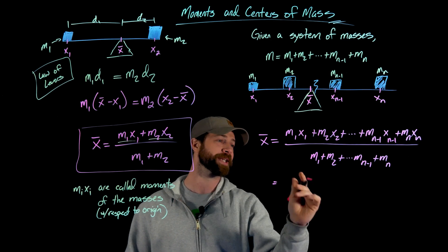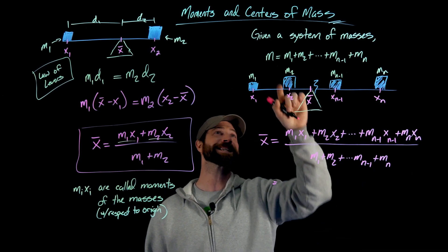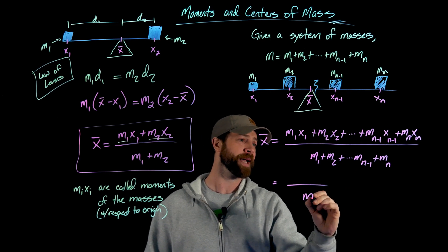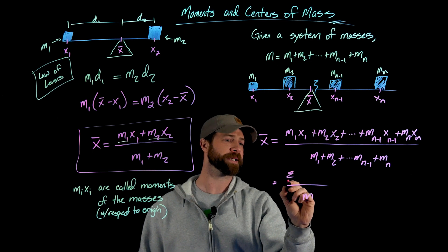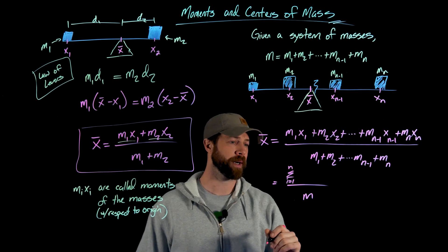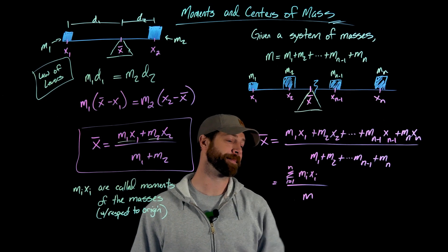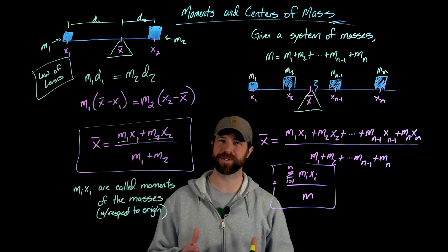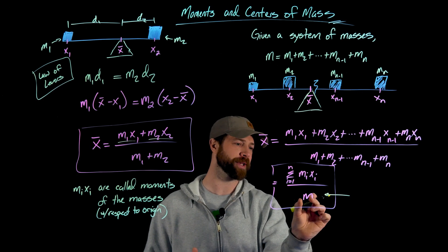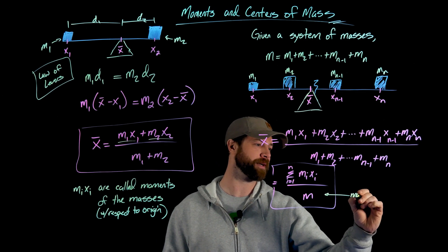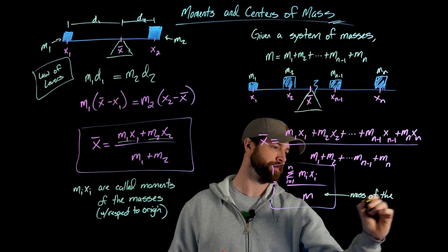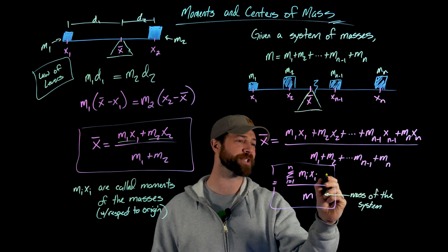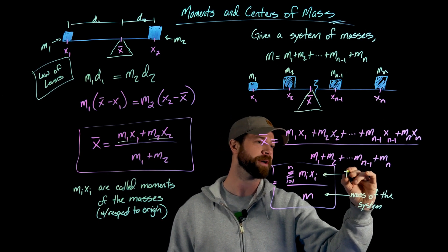We can simplify this. The sum of all these masses is the total mass of the system, which I'll just write as m. Then we write the numerator in sigma notation: the summation from 1 to n of m_i times x_i. This m (without subscript) is the mass of the system, and the summation of each of these individual moments — that summation on top — is called the moment of the system.